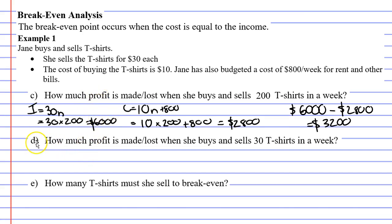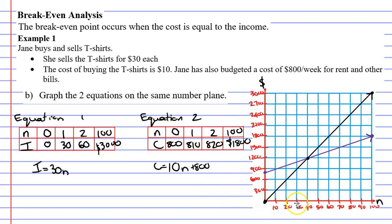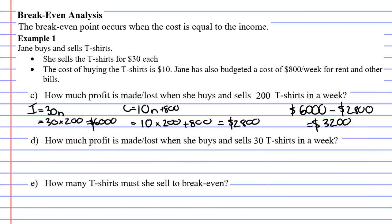All right, let's now move on to question D. It says, how much profit is made or lost when she buys and sells 30 t-shirts in a week? And we might be able to do that on the graph. If we look at 30, actually, the problem with the graph is you can't get an exact amount. You can go across. You're really only kind of guessing. So it is better if we can use the formulas. So we'll do that.